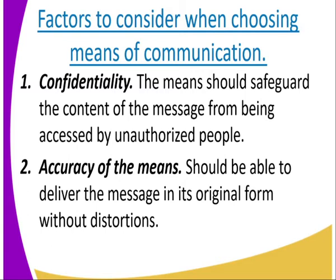Number two is accuracy of the message. The means should be able to deliver the message in its original form without distortion. For example, when using oral communication, the message can be distorted. So when you want accuracy of the data, you choose the right method — one that can preserve accuracy. For example, written documents: when you have used written communication, it cannot be altered.